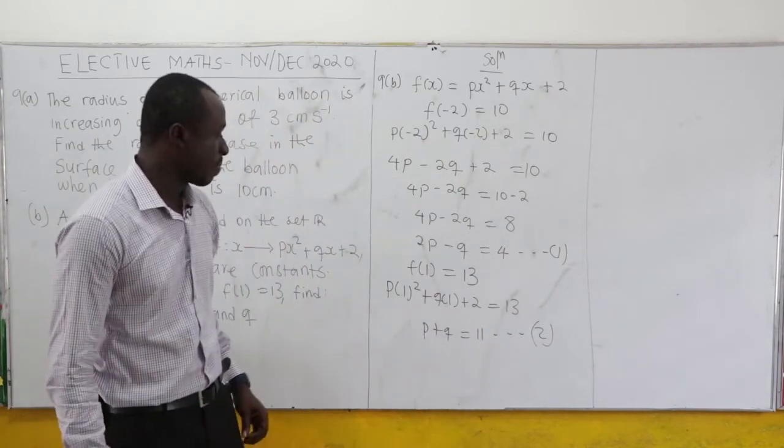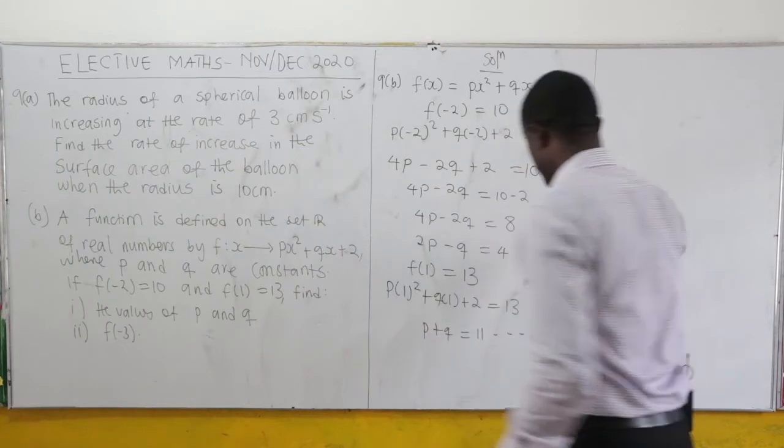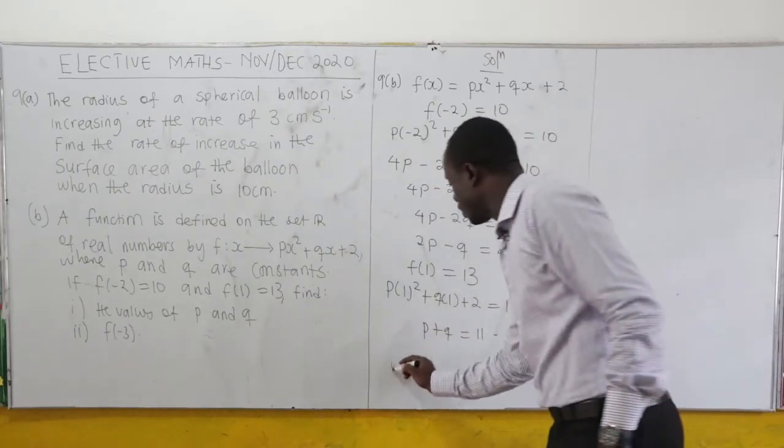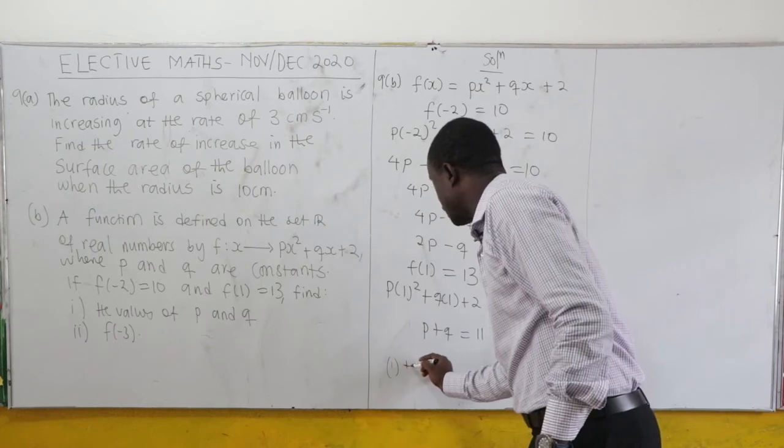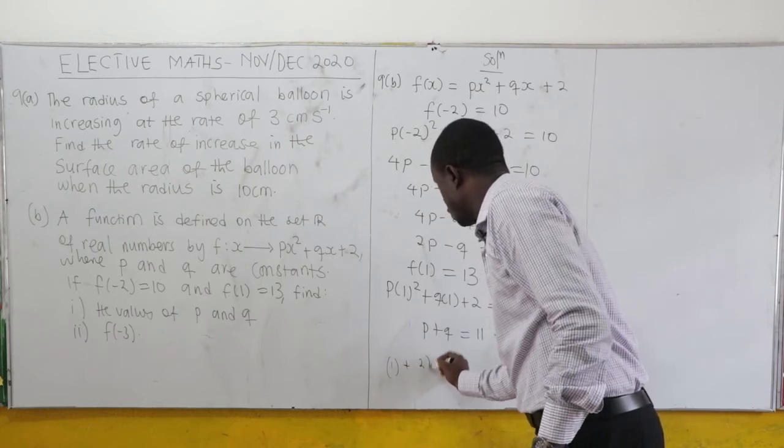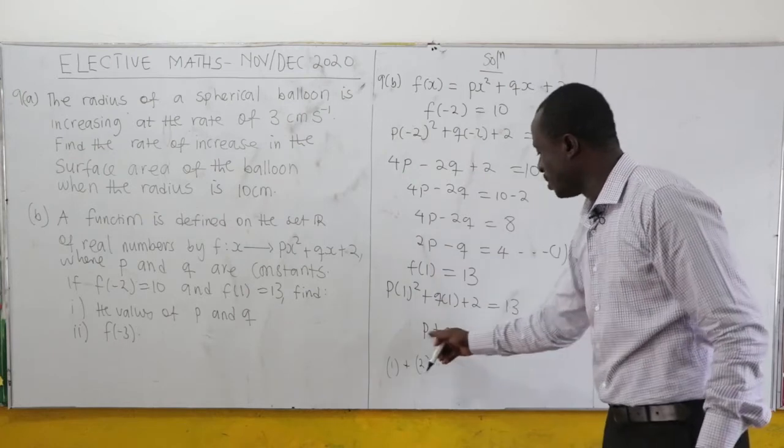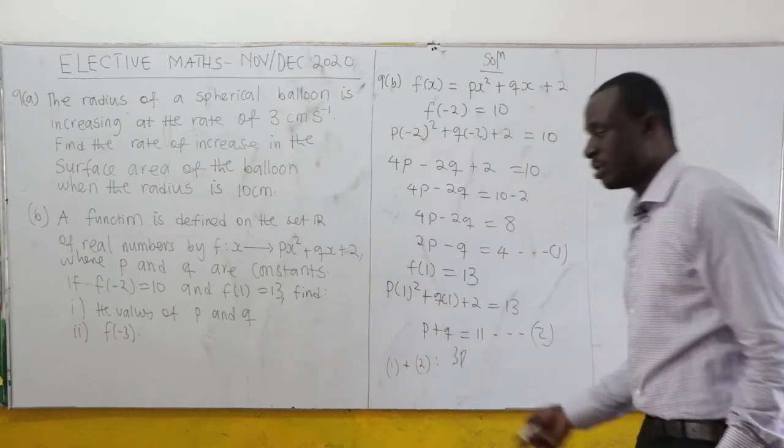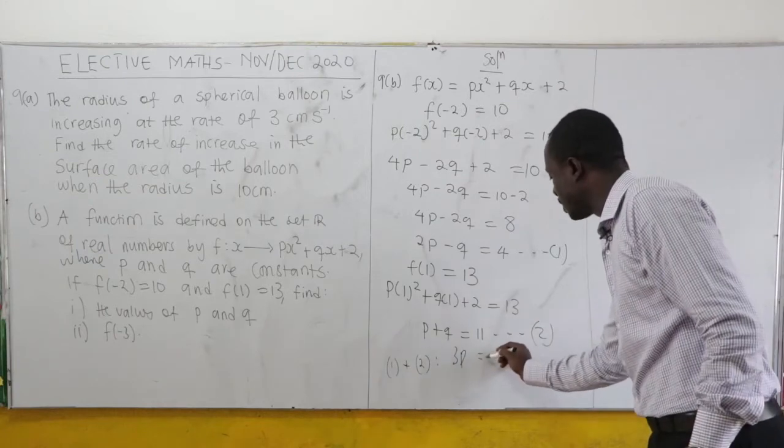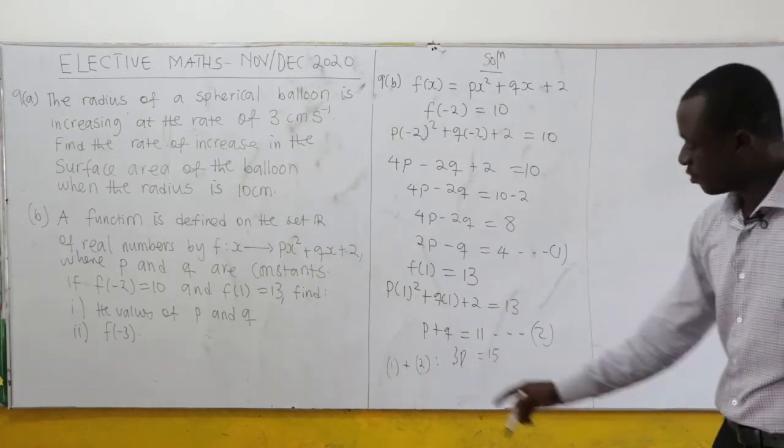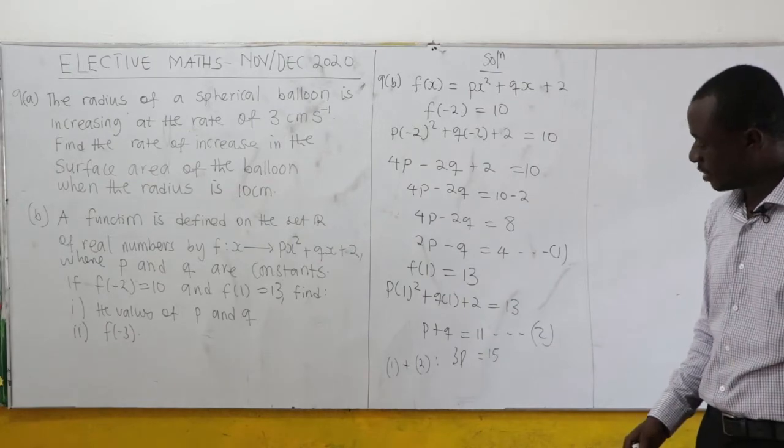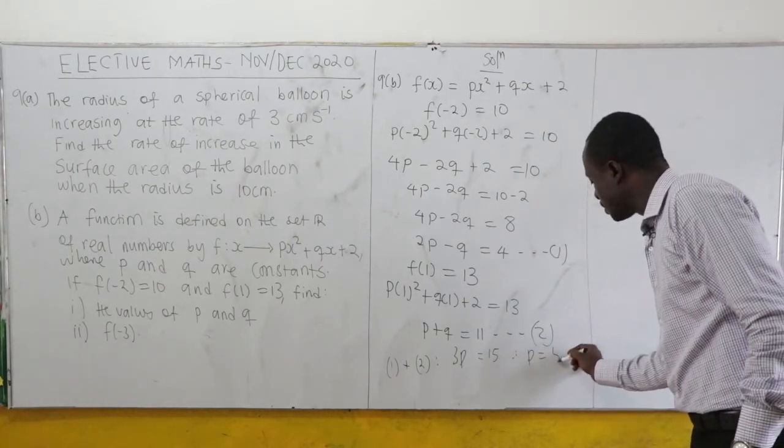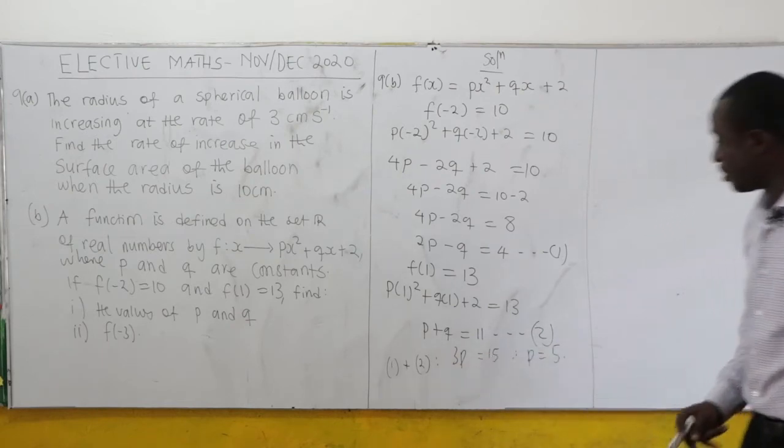Adding equations 1 and 2 to eliminate q: 2p + p = 3p, -q + q = 0, and 4 + 11 = 15. So 3p = 15, therefore p = 5.